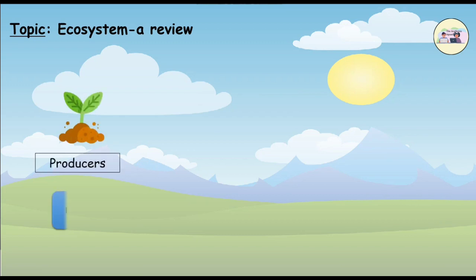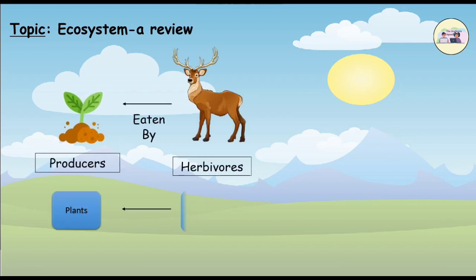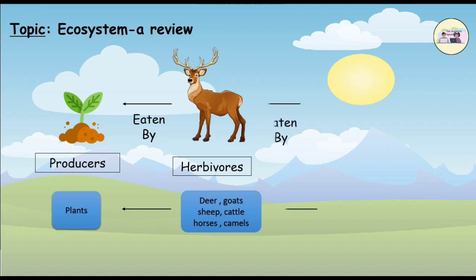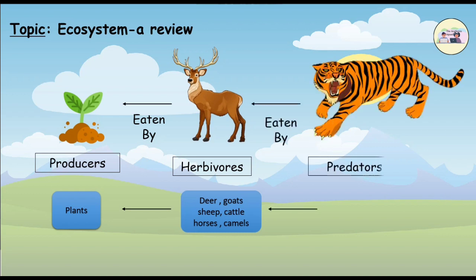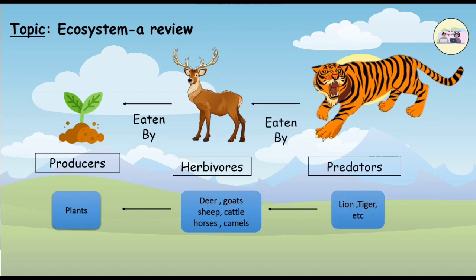Producers like plants are important. Herbivores like deer, goats, sheep, cattle, horses, camels, etc., feeding upon producers are also important. Predators like lion and tiger, which prevent the overpopulation of herbivores, are also equally important.